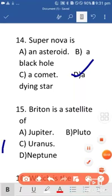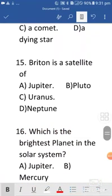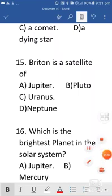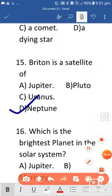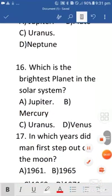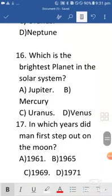Next is Triton is a satellite of, Triton is a satellite name and whose is it? It is basically D, Neptune's satellite name. Next is which is the brightest planet in the solar system? So it is option D, that is Venus.